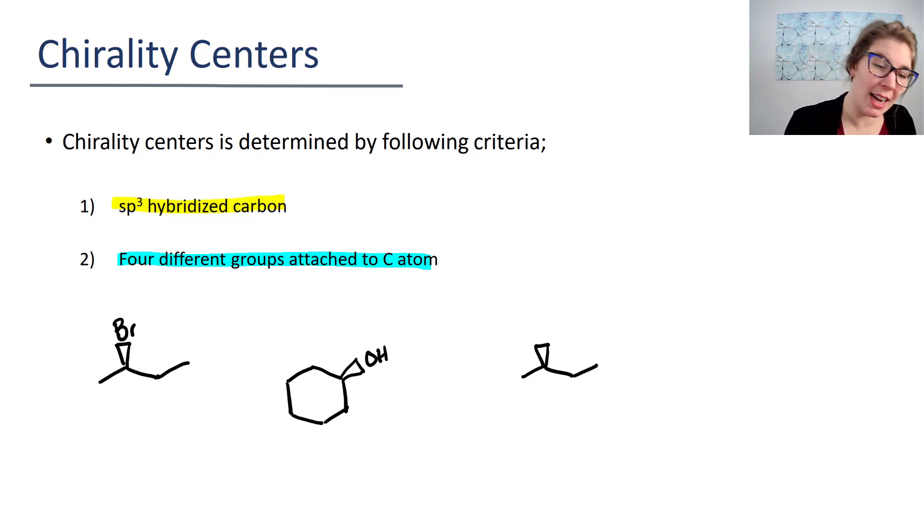This first one is going to have a chirality center here where I put this asterisk. How do I know? Because I have one group here for the bromine. I have one group here for the methyl. I have one group here for the ethyl. And then my fourth group is that hydrogen that's not drawn. So I meet the criteria that I have four different groups attached. The other thing is that the carbon that I put an asterisk next to was sp3 hybridized. So yeah, this is totally a chirality center.